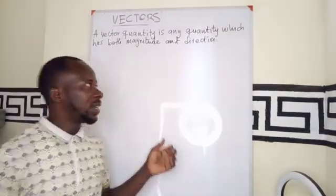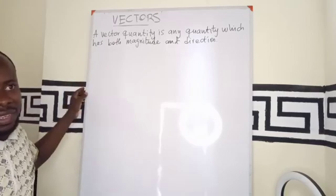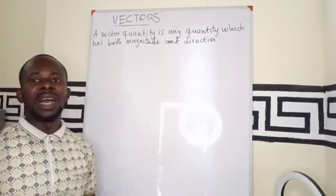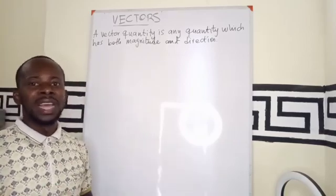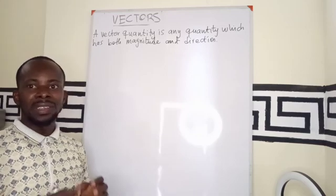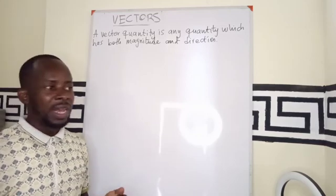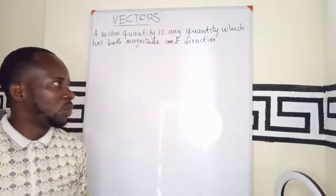A vector quantity is any quantity that has both magnitude and direction. That is, it has some kind of value and it has a direction attached to it.